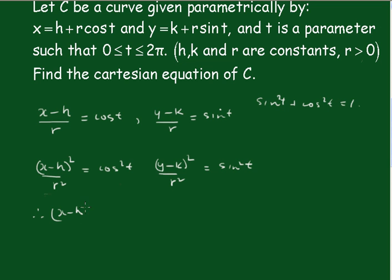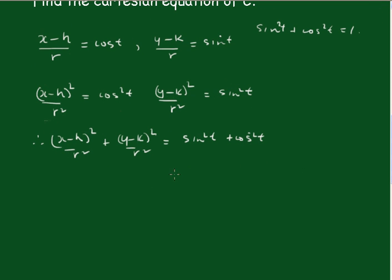Therefore, x minus h all squared on r squared plus y minus k all squared on r squared equals sin squared t plus cos squared t equals 1.